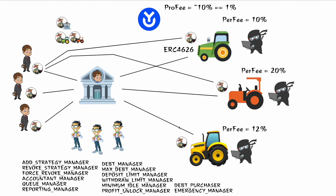The Reporting Manager triggers profit reports — this role is most likely a keeper bot. For example, if 100 Caesar tokens are sent to the green tractor and it generates yield to become 150 tokens, the vault doesn't know it yet. The Reporting Manager triggers the report, and then the price per share goes up because the vault now knows there are 150 Caesar tokens there. It doesn't need to be called constantly but should be called frequently.